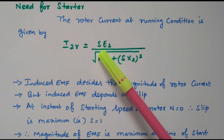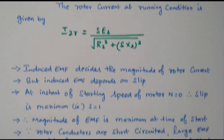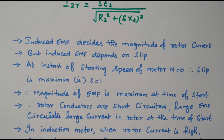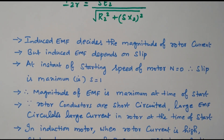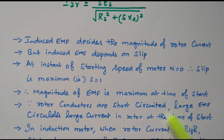At the initial condition, S equals 1, so the magnitude of the EMF is maximum at starting. Therefore, the rotor conductors are short-circuited and the large EMF circulates a large current in the rotor at the time of starting.